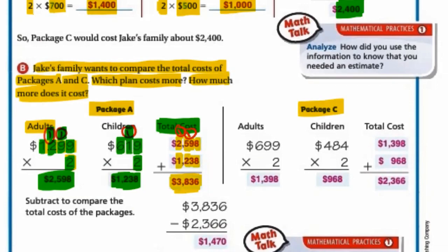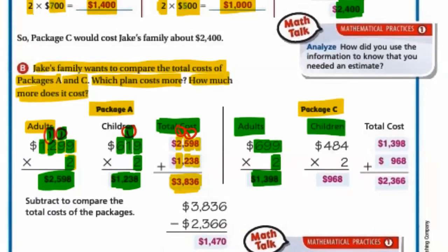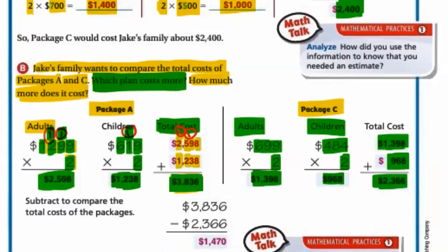Now let's find the total cost of package C. Multiplying 699 by 2 gives $1,398 for 2 adults, and the cost of 2 children is $968. Adding them together gives a total of $2,366 for package C. Comparing package A ($3,836) and package C ($2,366): comparing from the leftmost digit, 3,000 is greater than 2,000, so package A costs more.